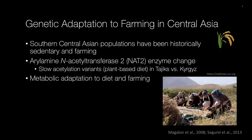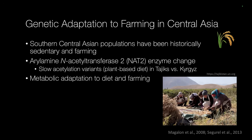Another phenotype of interest is dietary adaptation. Studies looked at genetic adaptation to farming in more southern Central Asian populations such as the Tajiks, who are known for being sedentary and involved in farming. A few studies showed they carry a different variant of the enzyme arylamine N-acetyltransferase 2, or NAT2, involving slow acetylation variants — also found in other groups with a plant-based diet. This was identified by comparing the sedentary agricultural Tajik population with the more pastoral Kyrgyz population, providing evidence for metabolic adaptation to diet and farming.